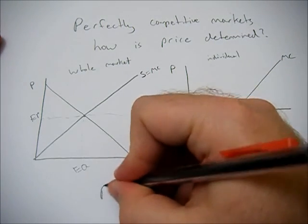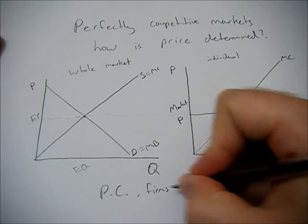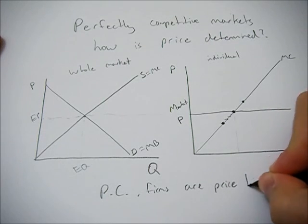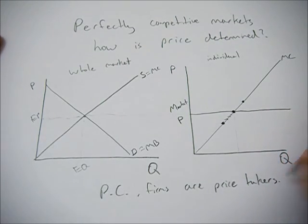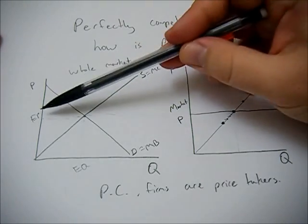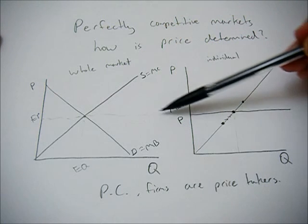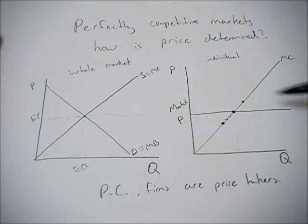So the key to remember here is that in perfect competition, firms are price takers, and that's because they cannot affect the market price for a good. Their price is determined by this interaction of the whole market, and you can just draw that line straight across to get the price for that individual firm.